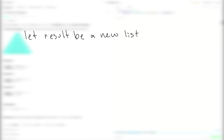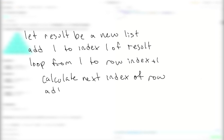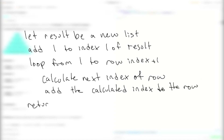For the pseudocode: we start by creating a new result list to store the actual row. We add 1 to index zero of result as our base case — the top element is always 1. Then we loop from 1 to rowIndex plus 1. If the index is only 0 we just return that list immediately. Otherwise we calculate the next index of the row, add that calculated value to the list, and once the loop ends we return the result list.